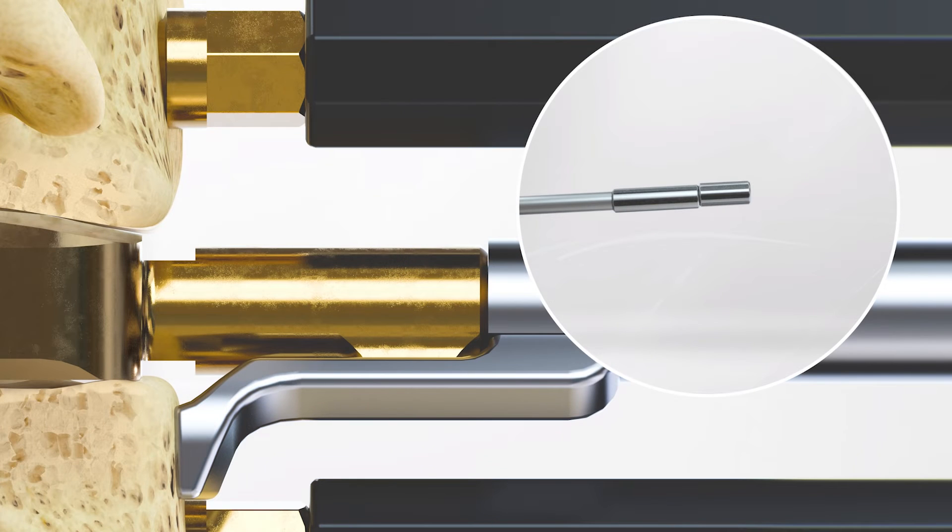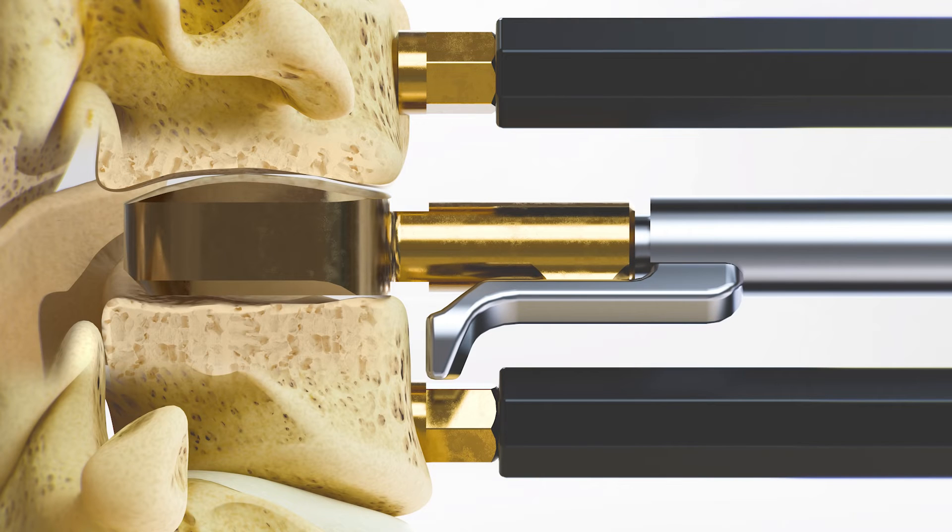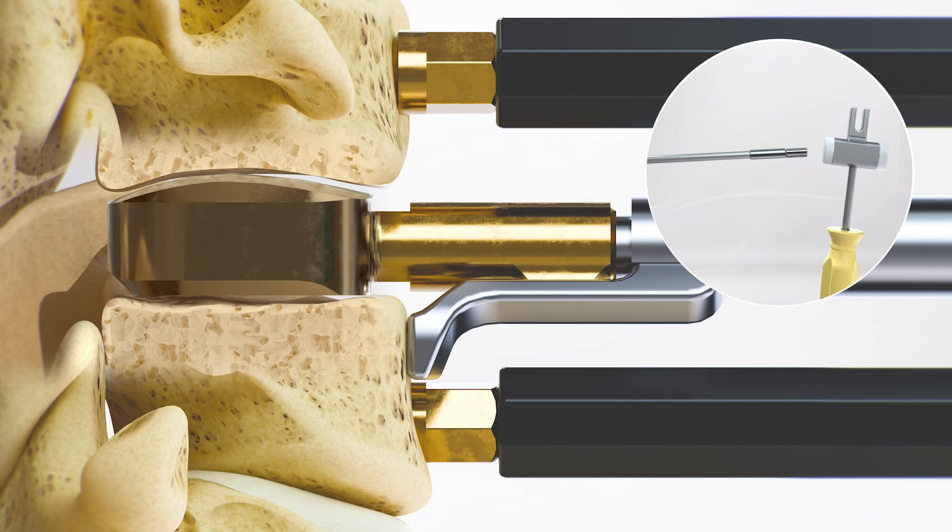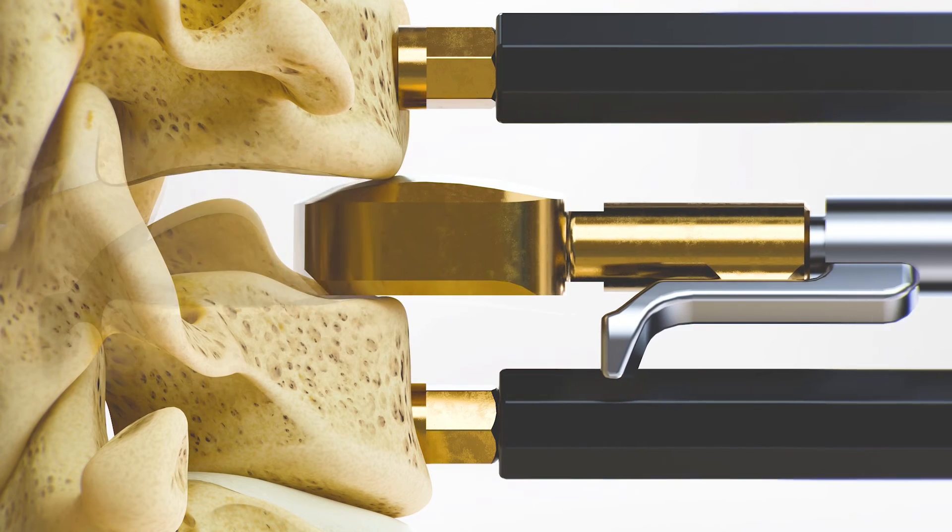Adjust the trial stop as needed to allow proper positioning of the trial within the disc space. The trial is advanced into the disc space. Once satisfied with the trial position, release distraction to evaluate trial height. Remove the trial.